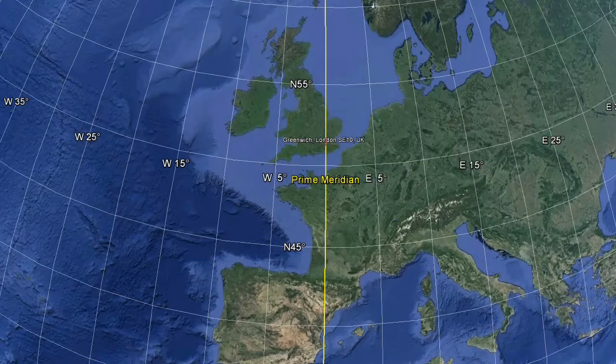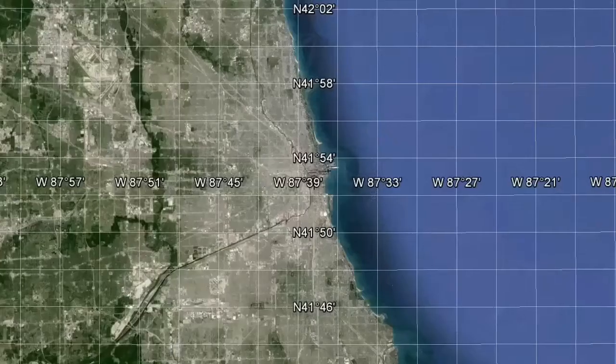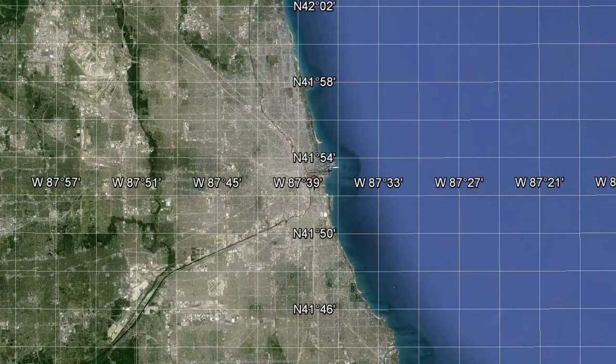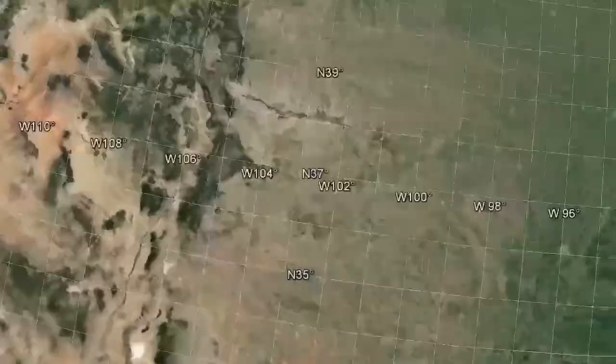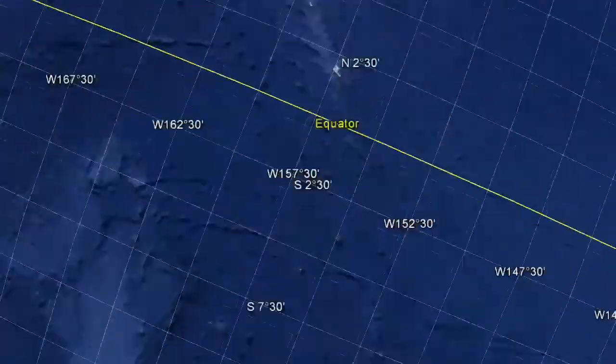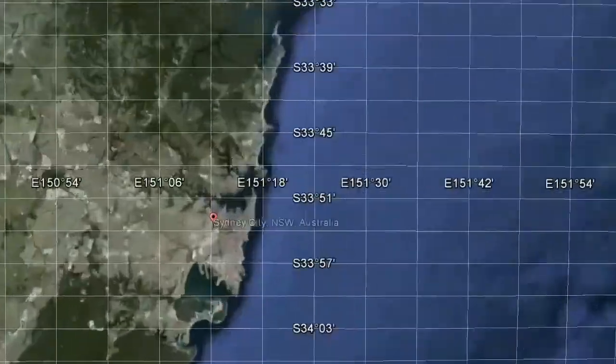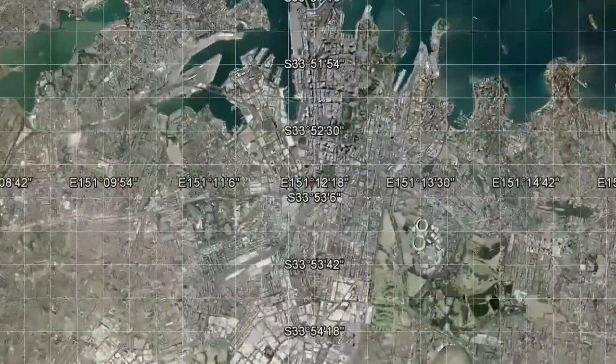So, Greenwich is the zero-degree longitude. Chicago, west of Greenwich, has a longitude of 88 degrees west. Sydney, east of London, is longitude 151 degrees east.